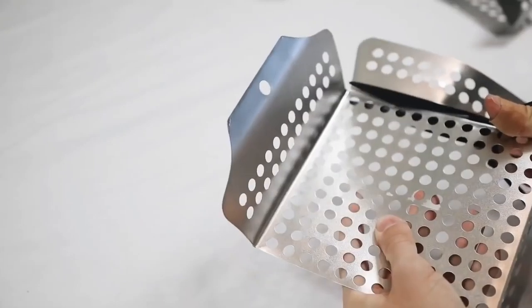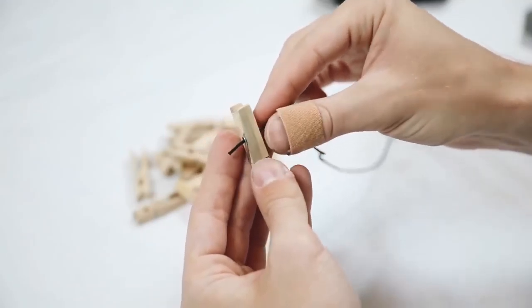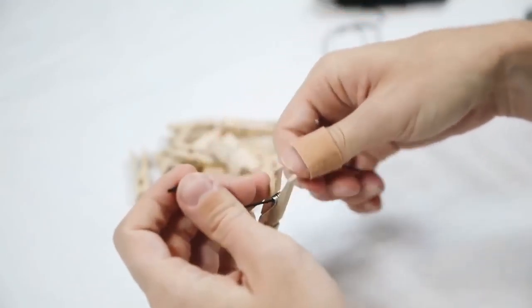So I went ahead and I cut off two sides of the grilling wok, and then we're going to be moving on to our wooden clothespins. These are some small wooden clothespins.